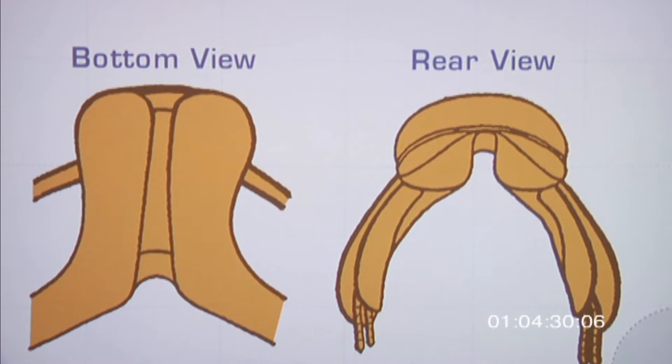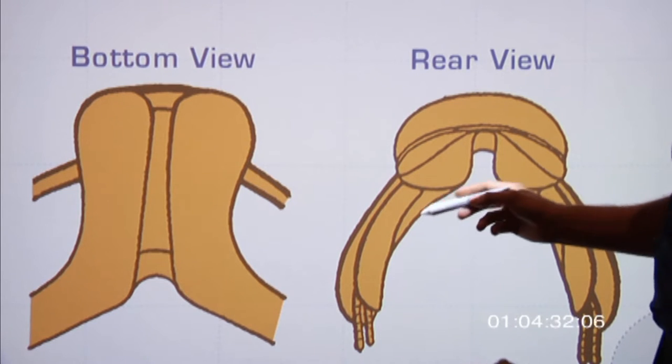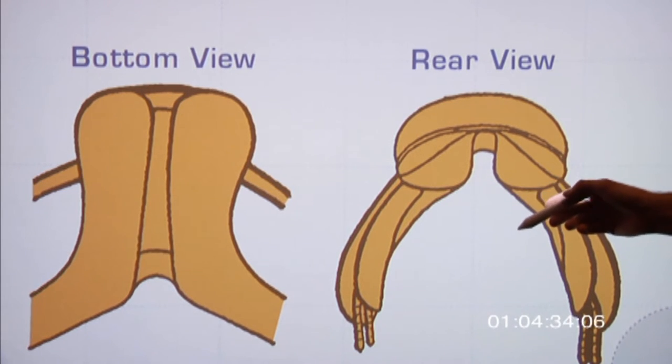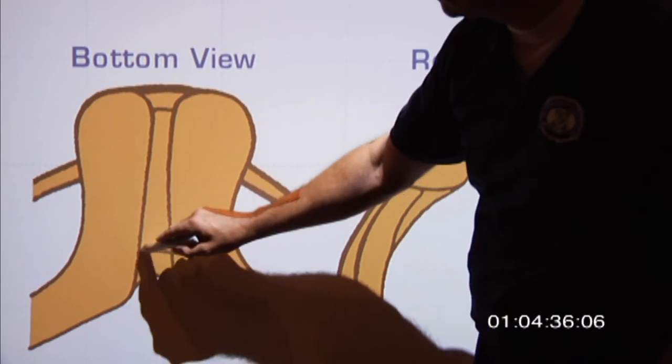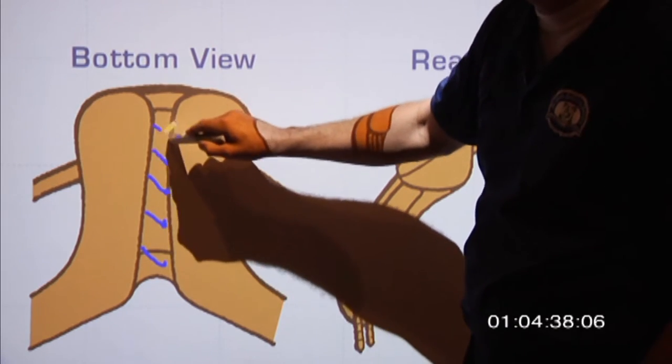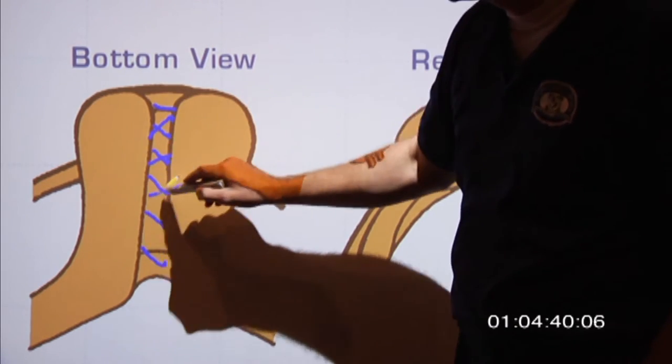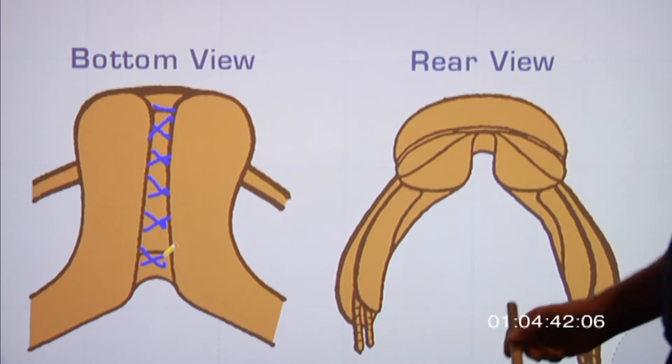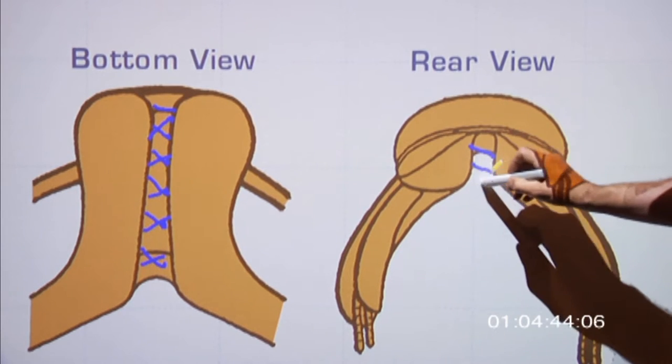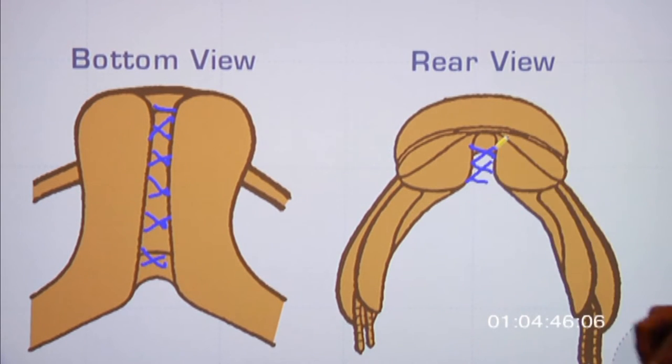Here we're looking at a saddle from the rear and from the bottom. What is the reason we have space right through here? Why do we need saddles with space through here? There's pretty much two main reasons.